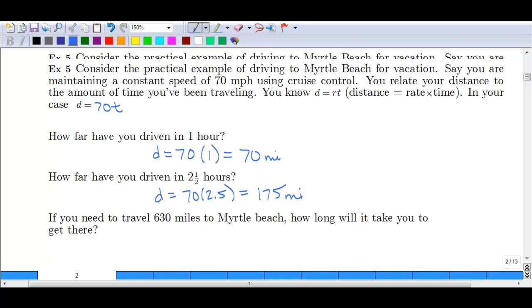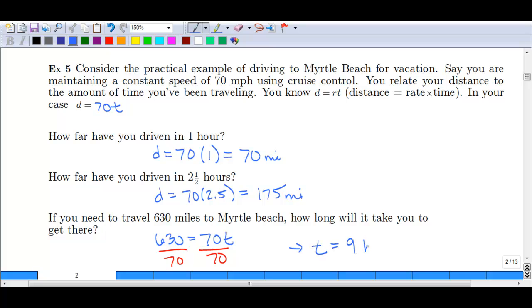If you need to travel 630 miles to get to Myrtle Beach, how long will it take you to get there? In this case, we've got our distance. So we've got 630 equals 70T. Then we can solve for T in this case by dividing both sides by 70. We find that T is equal to 9 hours.